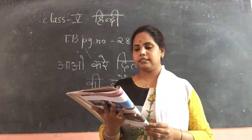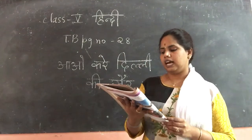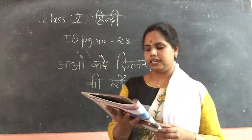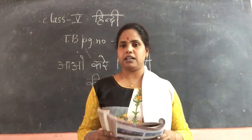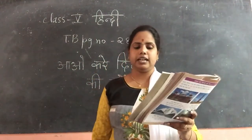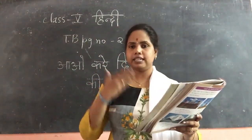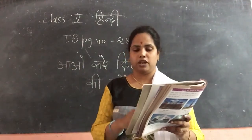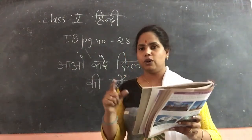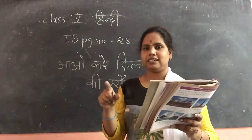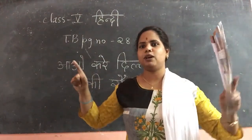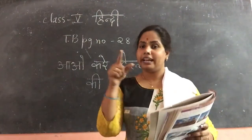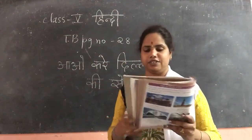Next one is Jantar Mantar. Yehaan imarat prachin Bharat ki vaigyanik unnati ki misal hai. This structure is an example of the scientific knowledge of ancient India — Prachin Bharat. Once we go inside it will be like a maze — the entrance is different and the exit is different.